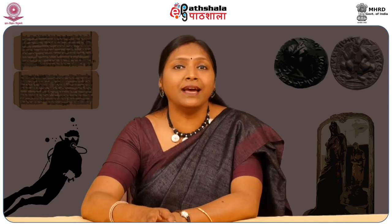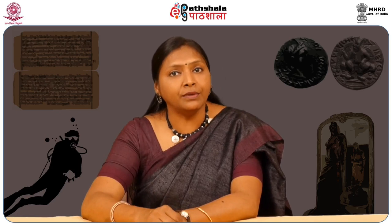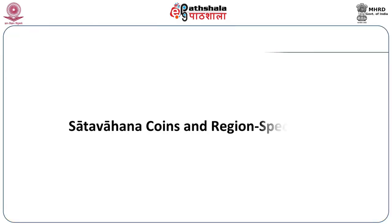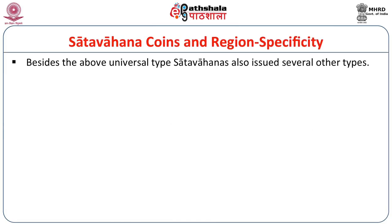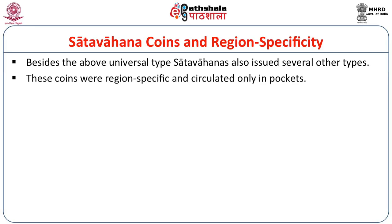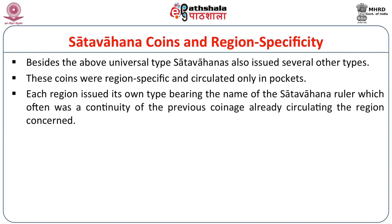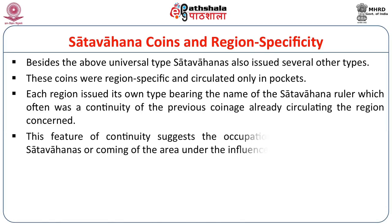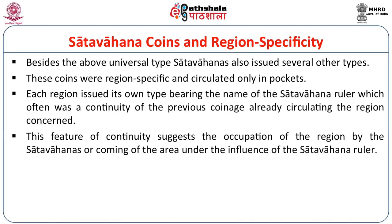It is very significant that the Satavahanas, who were a major power of the western Deccan and controlled western coast ports like Kalyan and Sopara, issued ship type coins for the eastern territories and not for the western territories. Most ship type coins have been reported from the eastern side of their territory. Besides the universal type, the Satavahanas issued several other region-specific types, each bearing the name of the Satavahana ruler, often as a continuity of the previous coinage already circulating in that region — suggesting their occupation of that area.